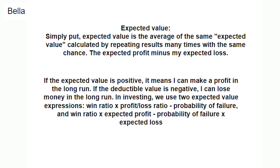The mathematical law we use in the investment market is expected value. In simple terms, expected value is the average calculated over the same number of repetitions given the same opportunity. In investing, it is the value of my expected profit minus my expected loss. If the expected value is positive, it means I can make money in the long run. If it is negative, I'm going to lose money over a long time. The expected value expressions we use in investing are: win ratio × break-even ratio minus probability of failure, or win ratio × expected profit minus probability of failure × expected loss.